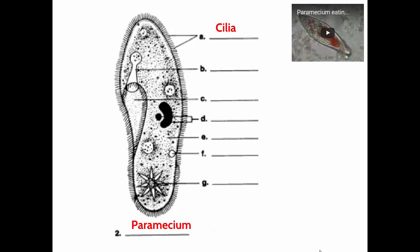What do you call this indentation here? It's also lined with cilia. It's like the mouth of the paramecium — it's called the oral groove. Food comes into the oral groove, then travels down this tube called the gullet. At the end of the gullet would be a food vacuole — the food ingested by the paramecium ends up in a food vacuole so it can be digested, and there are more food vacuoles that were formed as this paramecium ate.